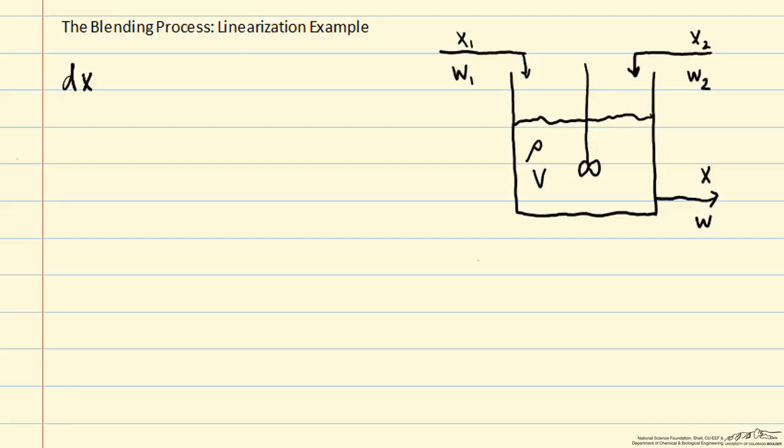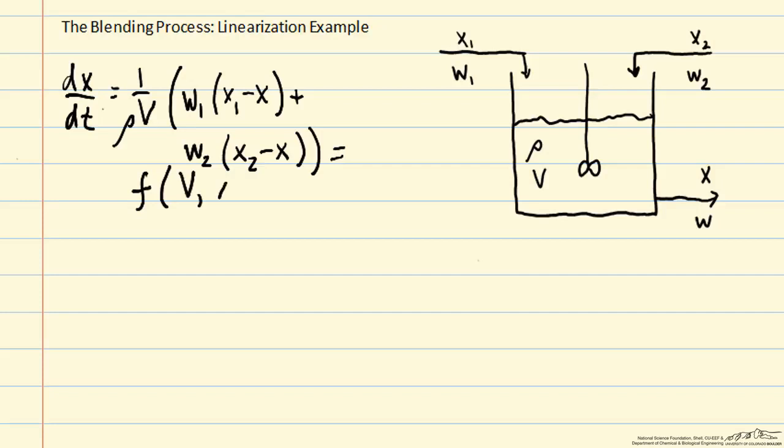We're going to consider the dynamic equation for mass fraction x leaving the tank. We derived this dynamic model previously using mass balances. So this is a nonlinear model, and we're going to refer to this right-hand side as our function f. It depends on time-varying quantities: volume V, mass fraction x. Now this is the mass fraction in the tank and leaving the tank because the tank is well-mixed. We also have inlet mass flow rates w1 and w2.